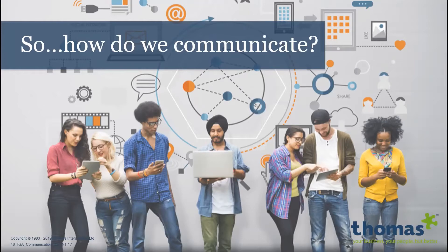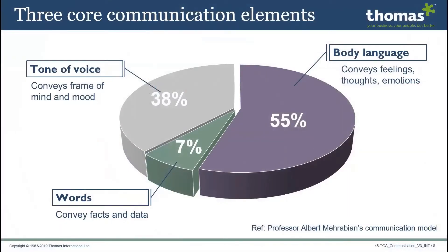Let's have a look at the poll results. Tone had 36%, body language had 45%, and words had 18%. Body language is actually the most important one. According to Professor Mehrabian's model, words make up only 7% of the message — the words you choose are vitally important because they convey facts and data. Tone is 38% and conveys your frame of mind and your mood, so how you deliver the message can give away how you feel about it. Body language is a massive 55% of the message and conveys your feelings, thoughts, and emotions.